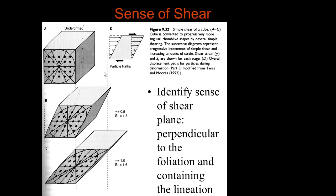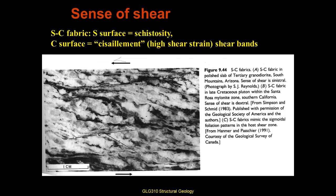When we're shearing, the sense of shear — like top to the right — is really important. We need to find the sense of shear plane, which is perpendicular to the foliation and contains the lineation. It's the face of a prism that you look at to see how things are shearing. Recalling our trip to the South Mountains, we can see the sense of shear plane: foliation defined by C-surfaces, a second weaker S foliation. Looking on top we see the lineation. This tells us it's top to the left, or in the South Mountains, top to the east — meaning the South Mountains were pulled up from underneath Red Mountain.